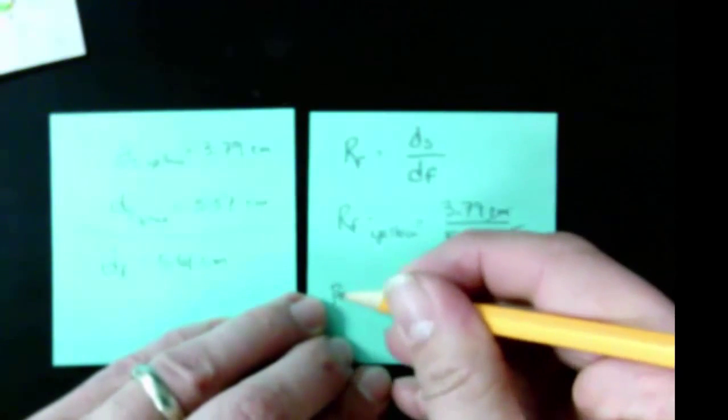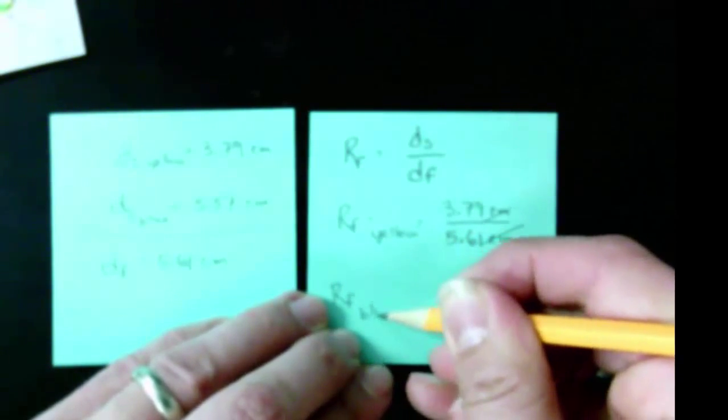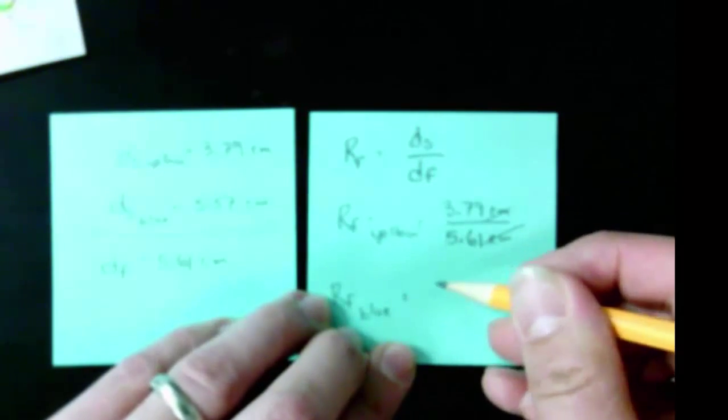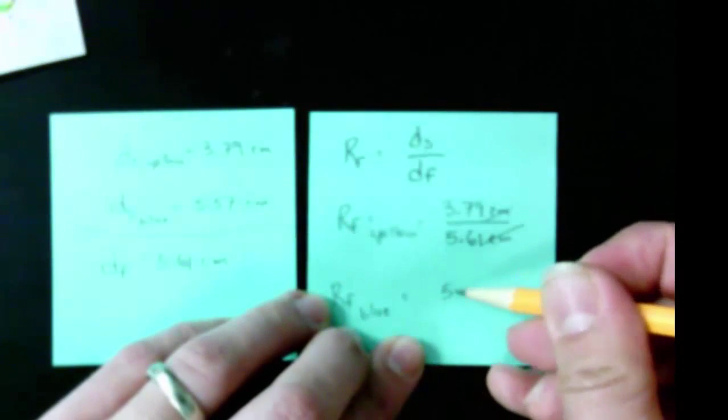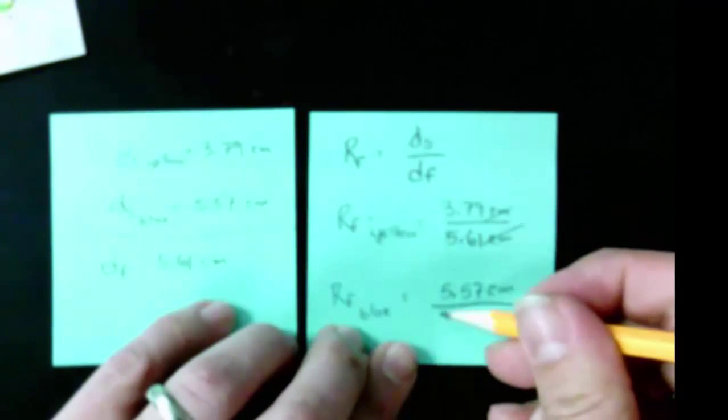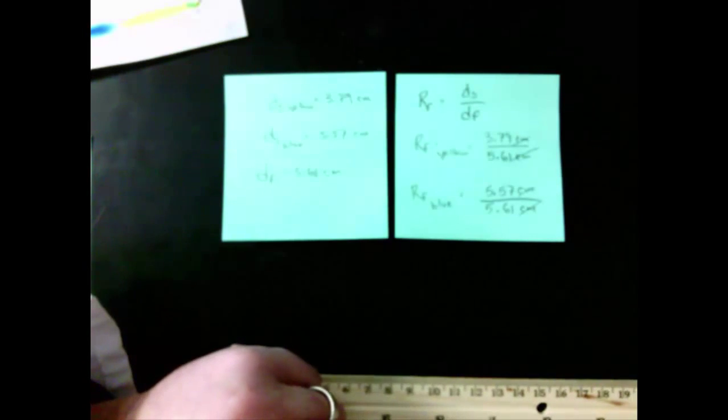And the rf for the blue will have a value of ds for the blue, 5.57 centimeters, divided by the same df, 5.61 centimeters. And again, centimeters cancel. You can do the calculations yourself if you want to check them, but that's really all there is to it.